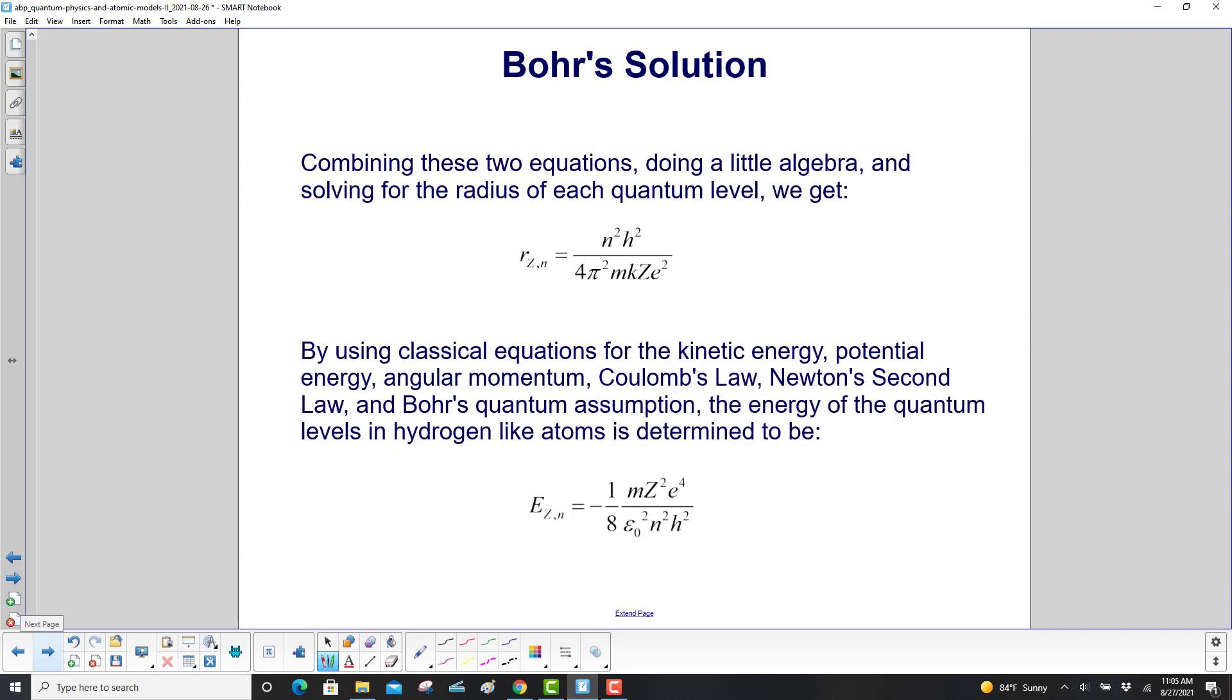Combining these two equations, doing a little algebra, and solving for the radius of each quantum level, we get this expression here, where z is the atomic number, n is our quantum number, one, two, three, four, et cetera. And that's n² times Planck's constant squared over 4π², mass of the electron, k, which is Coulomb's constant, z atomic number, and e², where e is charge on the electron.